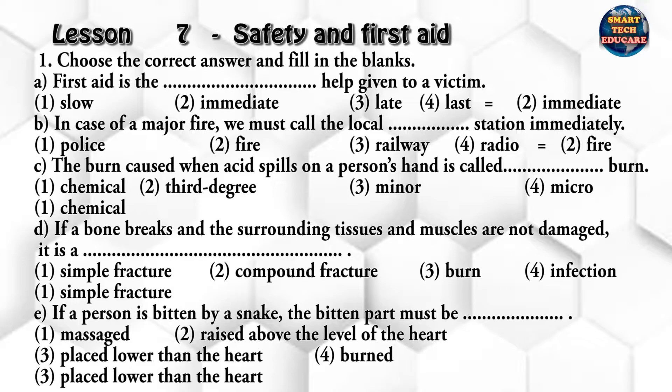The burn caused when acid spills on a person's hand is called a chemical burn. If a bone breaks and the surrounding tissues and muscles are not damaged, it is called a simple fracture.